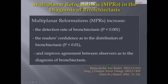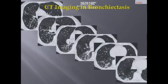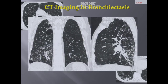Several investigators have demonstrated that multi-planar reformations increase the detection rate of bronchiectasis, the reader's confidence as to the distribution of bronchiectasis, and improved agreement between observers as to the diagnosis of bronchiectasis. That's why when we obtain the overlapped thin slices, we have to rapidly and automatically obtain coronal and sagittal thin sections and visualize these images.